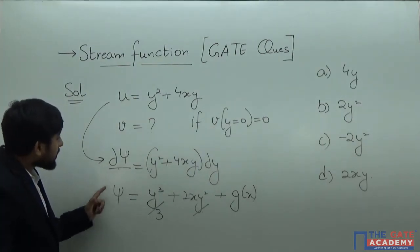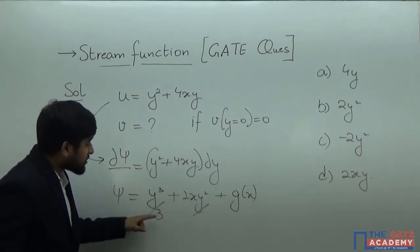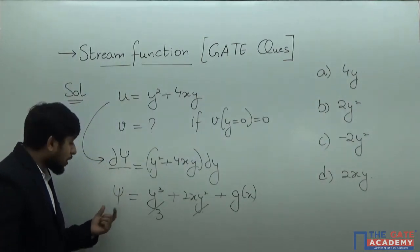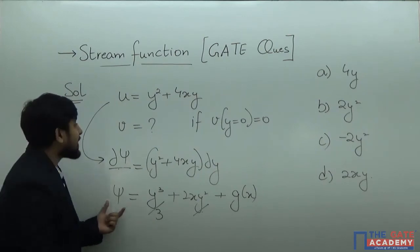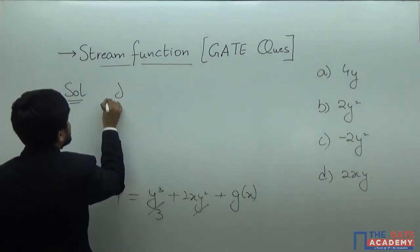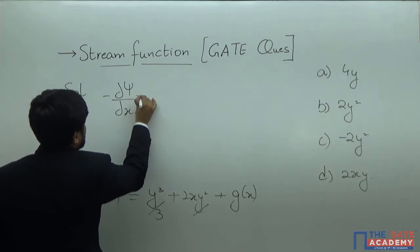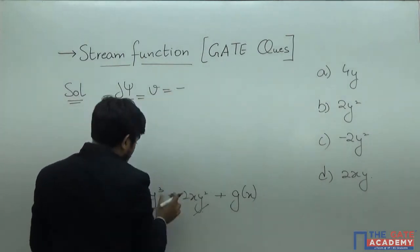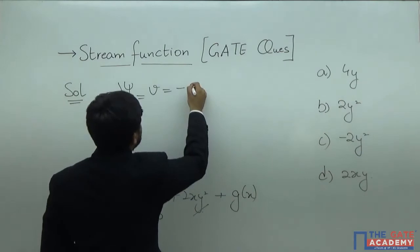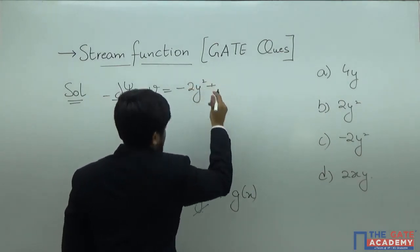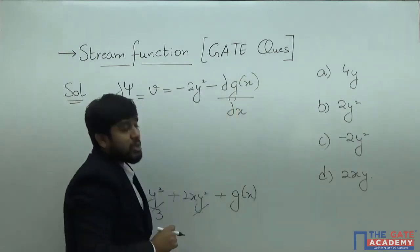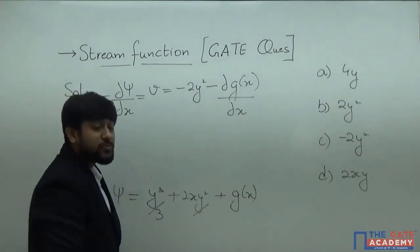Now let us write down the expression for v from this equation, noting that g(x) is still unknown. v equals minus del psi by del x. Differentiating with respect to x: y³/3 gives zero, 2xy² gives minus 2y², and g(x) gives minus the partial derivative of g(x) with respect to x. So v equals minus 2y² minus dg/dx.